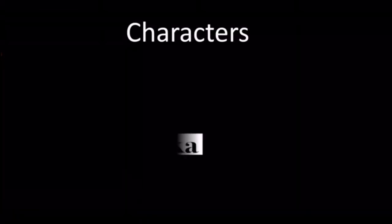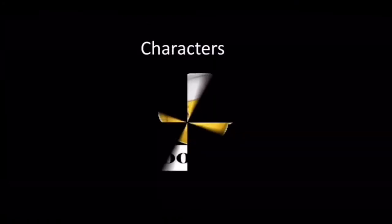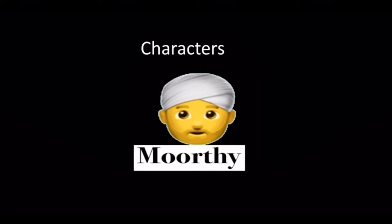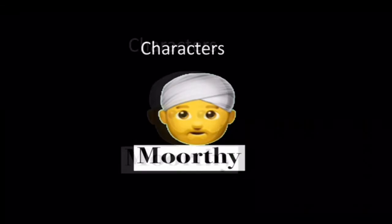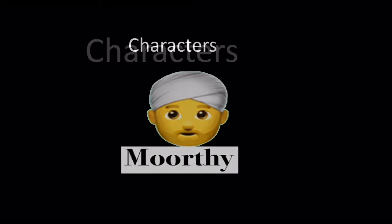Let us look at the characters of Kanthapura. The first is Achakka. Achakka is the story narrator and is a woman from the village of Kanthapura. Second is Murthy, the book's central protagonist. He is a young Brahmin who rejects the hierarchical caste system. He is the major character of the novel, is a Brahmin, a graduate, and a clean child.